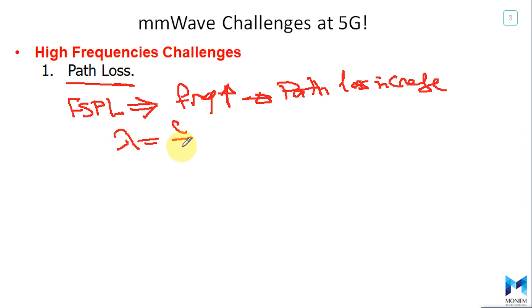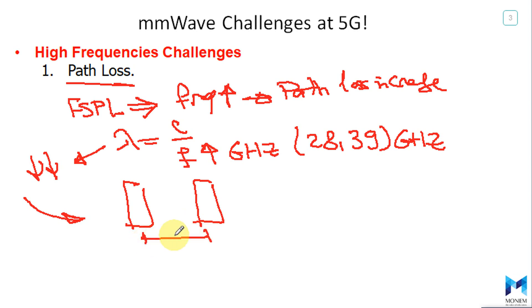When frequency is at gigahertz like 28 and 39 gigahertz, the lambda will be smaller. So you know, with decreasing the wavelength, the required spacing between antenna elements, the spacing lambda over 2, will be much less.